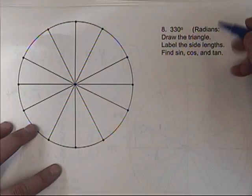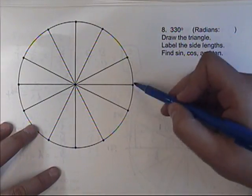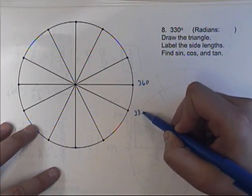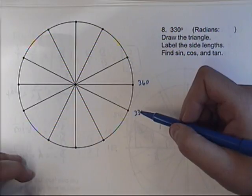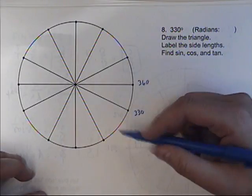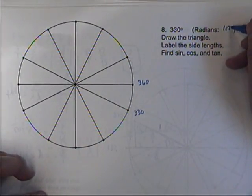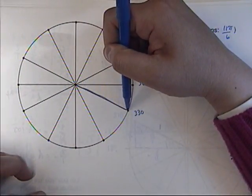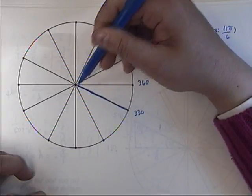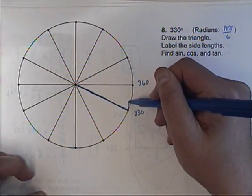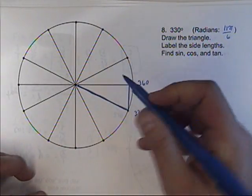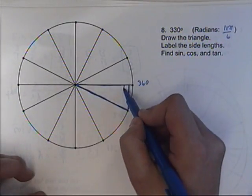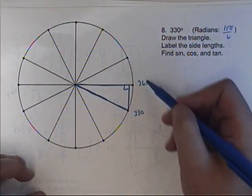330 degrees is 30 degrees short of 360. So if this is 360, this would be 330. In radians, counting in sixths, that would be 11 pi over 6. Here's my spoke going back up towards the x-axis and then back towards the origin — that's my triangle.